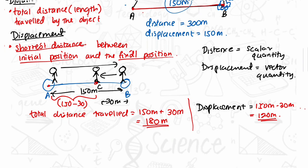So the distance traveled by this man will be 180 meters, and the displacement will be 120 meters.